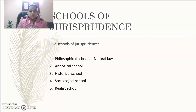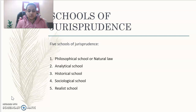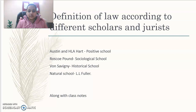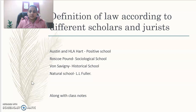Each school talks about the development and understanding of law from a different point of view. As students of law and legal method, we will be discussing different scholars from different schools. Under the positivist or analytical school, the focus shall remain on Austin and H.L.A. Hart. Under the sociological school, the discussion shall cover Roscoe Pound. For the historical school, Von Savigny, and L.L. Fuller for the natural school of jurisprudence.